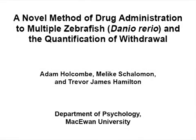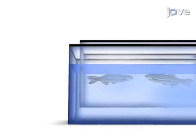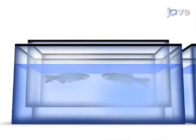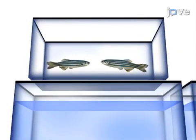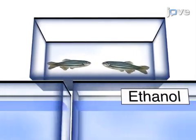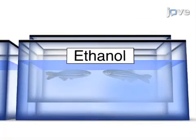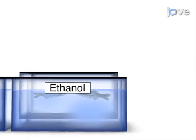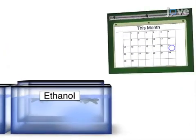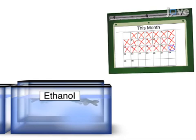The overall goal of this procedure is to dose groups of fish accurately and efficiently with ethanol for assessing the effects of repeated dosing on withdrawal behavior. This is accomplished by first dosing the zebrafish using a new method that allows for the simultaneous drug exposure of whole groups of fish for precise amounts of time. The second step is to continue dosing the fish on a schedule that permits testing for specific effects of ethanol withdrawal.